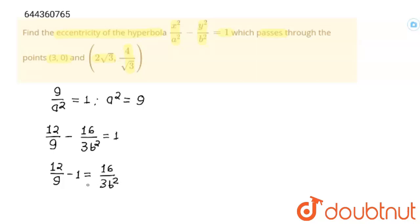And when I will subtract this you will get 3/9 = 16/(3b²). 3 will cancel with 9. We will cross multiply to get b² = 16.